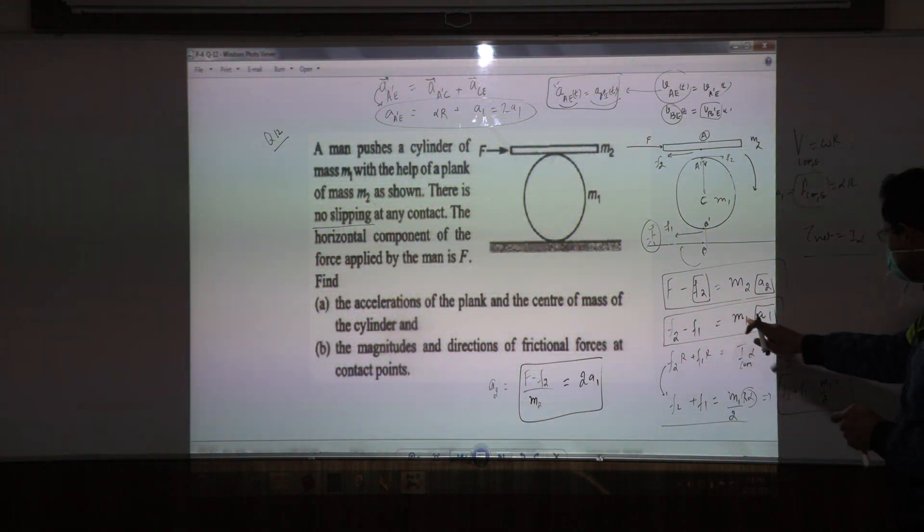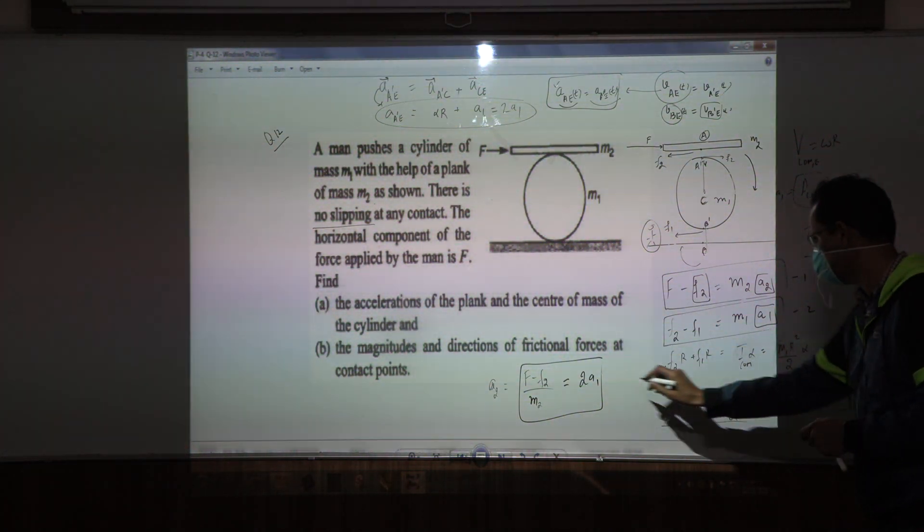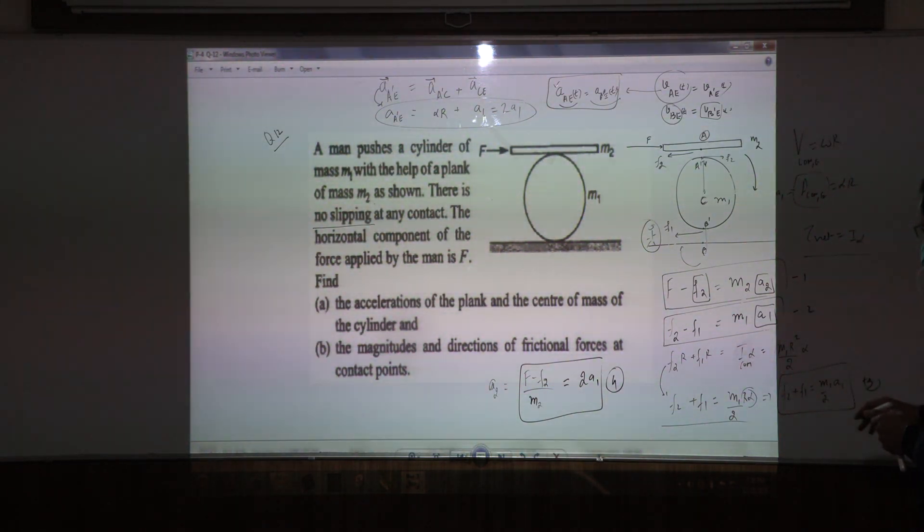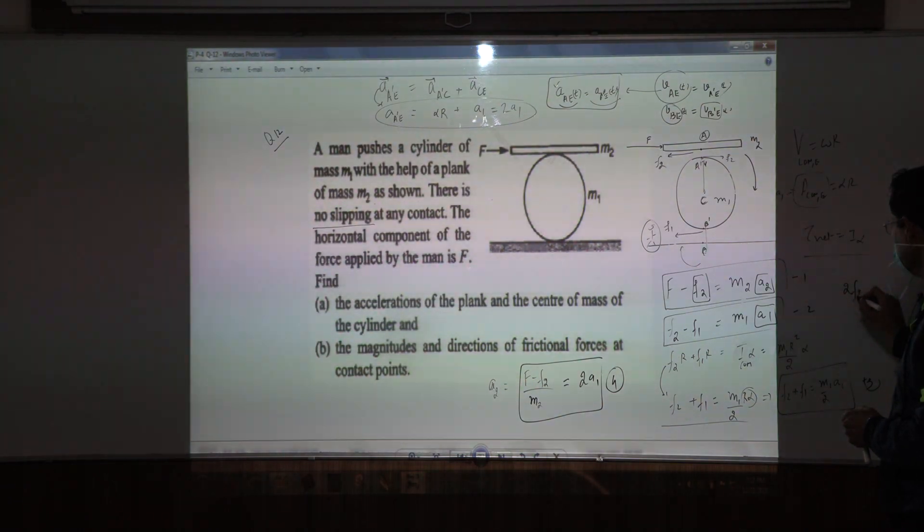we can immediately see that if we just add these equations, let us call them as 1, 2, 3 and 4, right? If we simply add 2 and 3, you add 2 and 3, what do you get? You get 2F2 equals